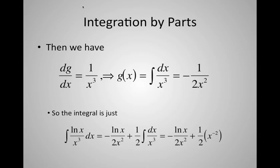We got that by computing (df/dx) times g: f was log(x), so df/dx was 1/x, and g was minus 1 over 2x². Multiplying gives minus 1 over 2x³, and integrating that remaining term gives the final answer.